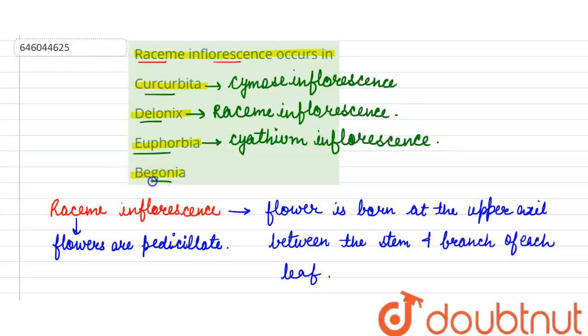And the last option is Bignonia. Bignonia shows cymos type of inflorescence.